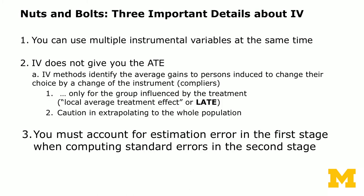Now let's go back to the nuts and bolts of IV. You can use multiple instrumental variables at the same time, though our two examples each had only one. Importantly, IV does not give you the average treatment effect. The IV method identifies the average gains to persons induced to change their behavior by a change in the instrument — only for the subset of compliers. This effect is called the Local Average Treatment Effect, or LATE.